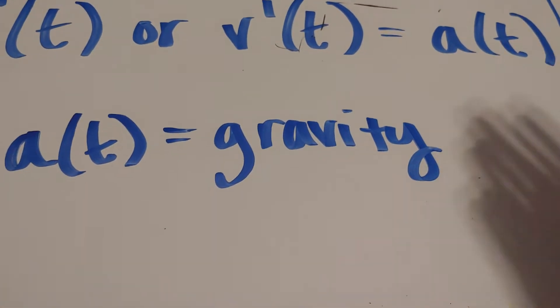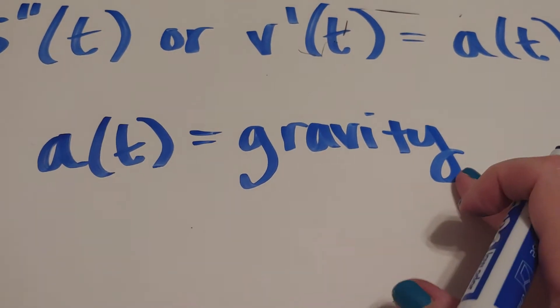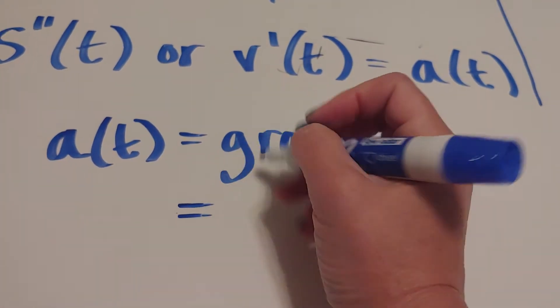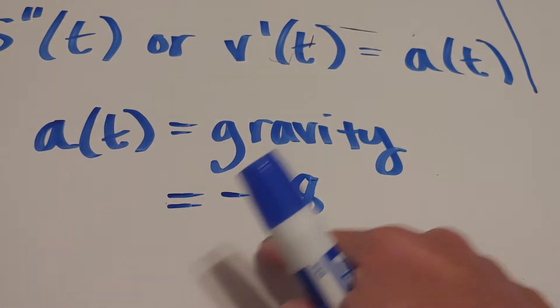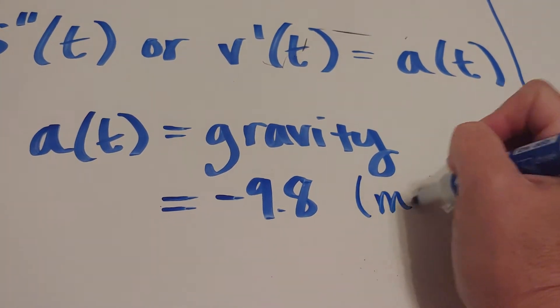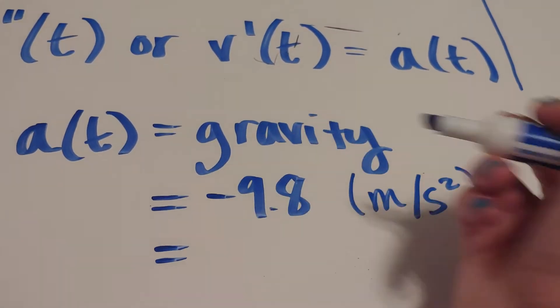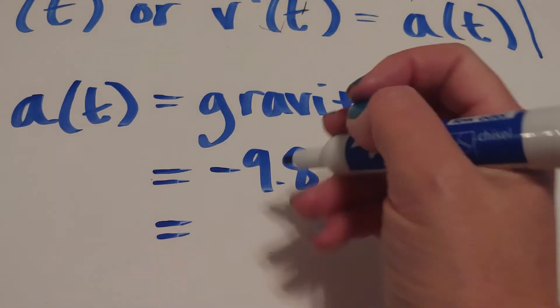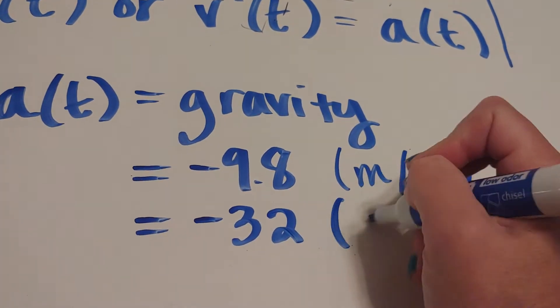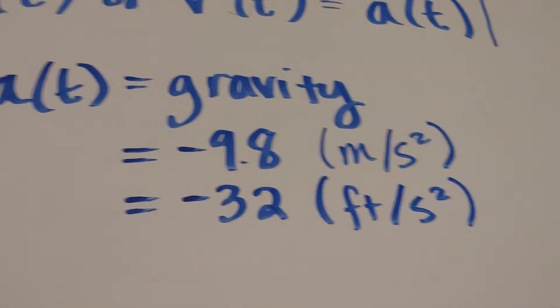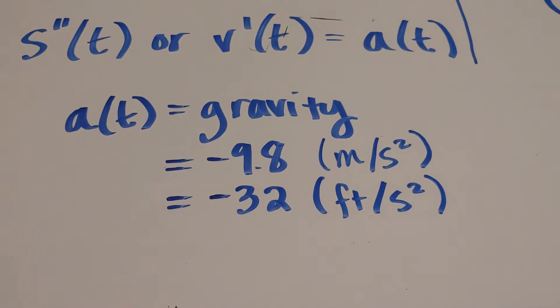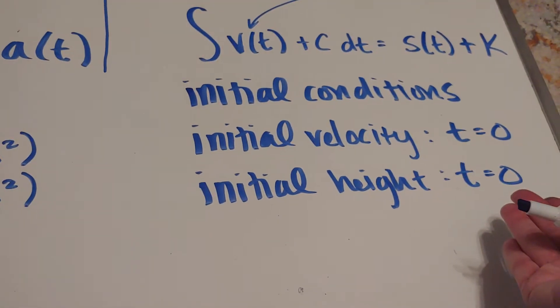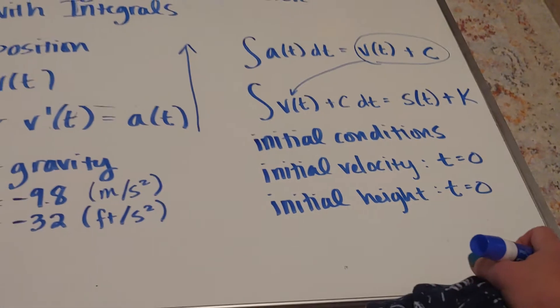Since we're throwing it up in the air, gravity is working in the opposite direction, so typically you'll see gravity as a negative number. If we are working in the metric system, it is negative 9.8 meters per second squared. And if we're working in the American system with feet and seconds, then it's negative 32 feet per second squared. I'm going to do a problem start to finish that has us using gravity to work backwards with initial conditions so that I can get a velocity equation and a position function.